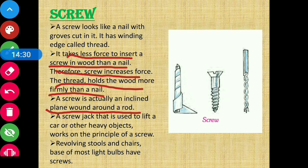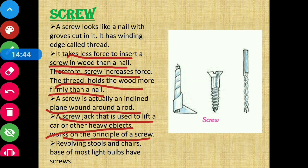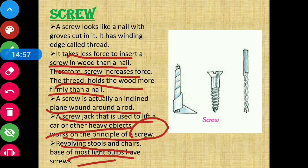A screw jack, which is used to lift a car or other heavy objects, works on the principle of a screw. Revolving stools and chairs, and the base of most light bulbs, also have screws. Different machines mein bhi screws hote hain — jaisi ki revolving stool, chairs, aur jo base hote hain light bulbs ke, un sab mein bhi screws present hote hain. This is the whole way in which screws can help us as a simple machine.